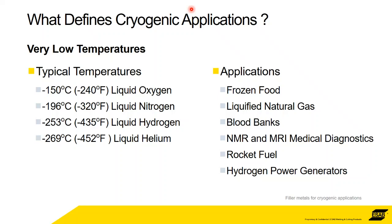The applications we use cryogenics for include, not surprisingly, frozen food. LNG — liquefied natural gas — is one of the biggest applications in the world for cryogenics, purely due to the size of the business. MRI-type machines require a lot of refrigeration. Rocket fuel is particularly special. And what's becoming more and more prevalent these days is hydrogen power — the technology is really starting to come into its own, and we'll talk about that later.